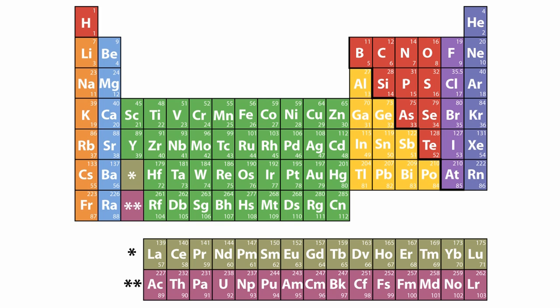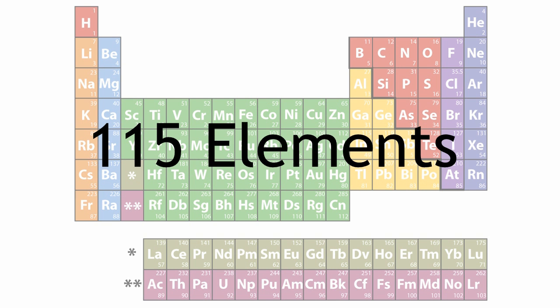In the modern periodic table, there are currently around 115 elements, and although new elements aren't really being discovered anymore, new ones are being made by scientists.